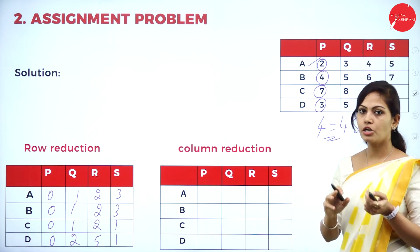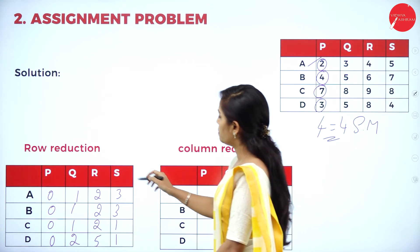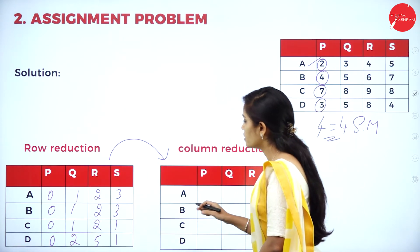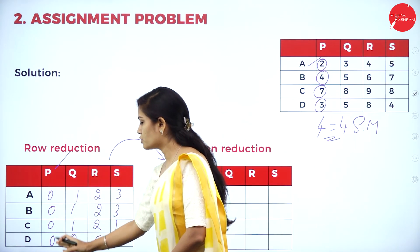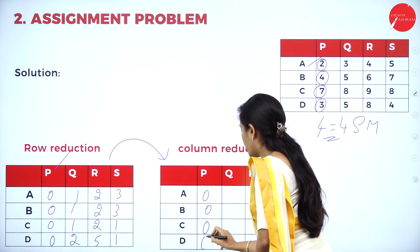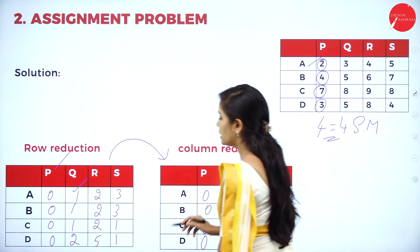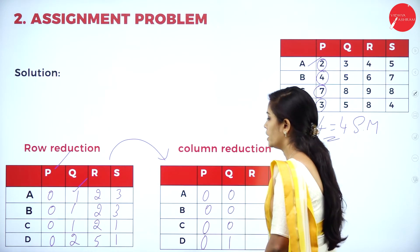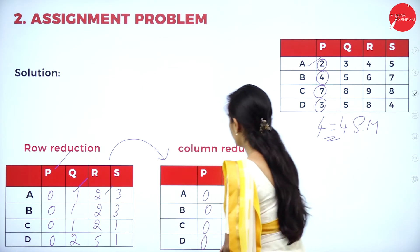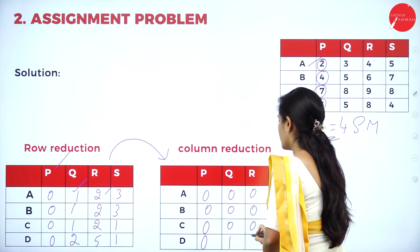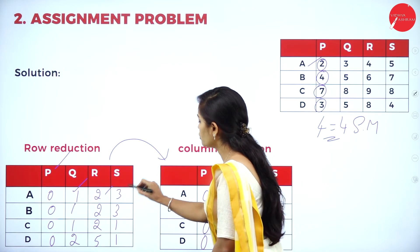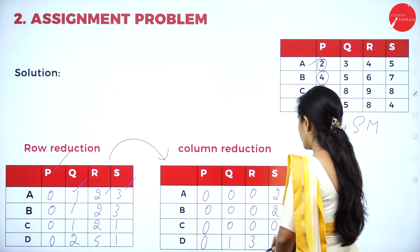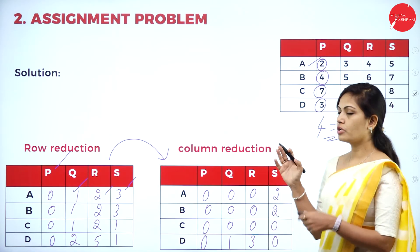Next step is column reduction using the row reduction matrix. First column: least value is 0, so all values stay the same. Second column: least value is 1 — subtract 1 from each. Third column: least value is 2 — subtract 2, giving 0, 0, 0, 3. Fourth column: least value is 1 — giving 2, 2, 0, 0. Column reduction is now finished.